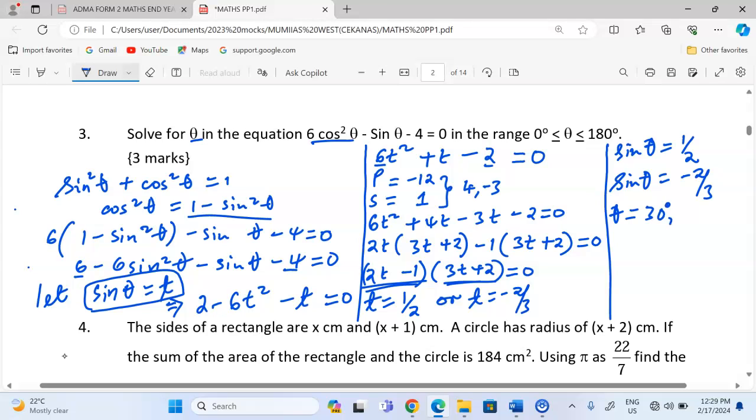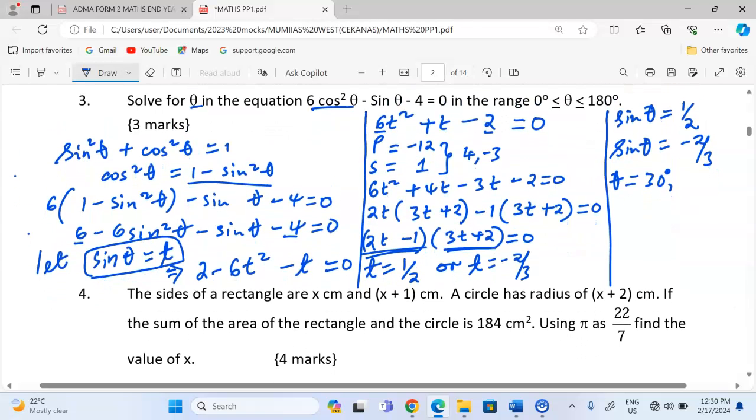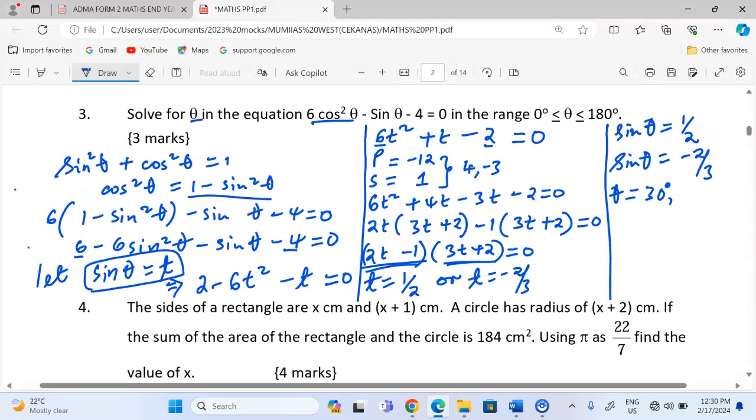It should also be known that 30° found in the second quadrant will also give us the same sine. And so that is why we should work with an angle of 150° also. This is 30° in the second quadrant. This is 30° in the first quadrant. So those are two possible angles which can sweep this range.